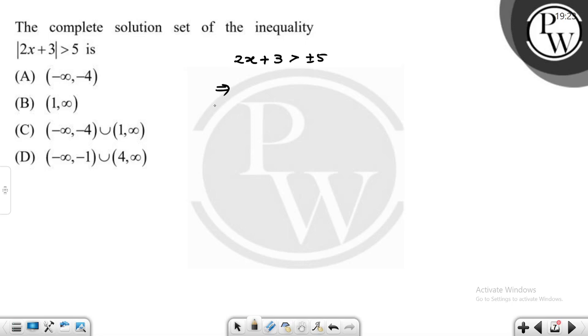This means if we take this, we will write 2x plus 3 is greater than 5. Now negative and positive means 2x plus 3 minus 5 and we will write 2x plus 3 plus 5 is greater than 0.